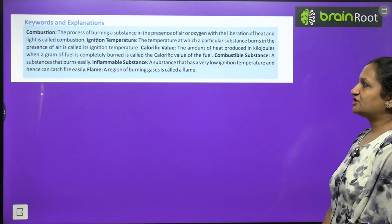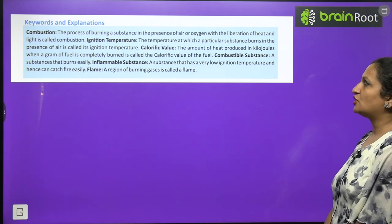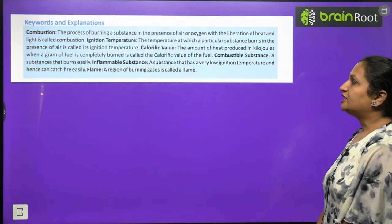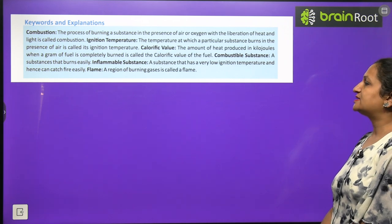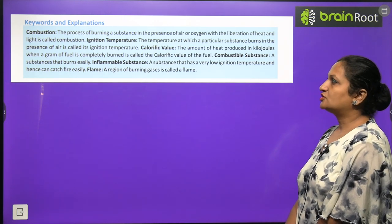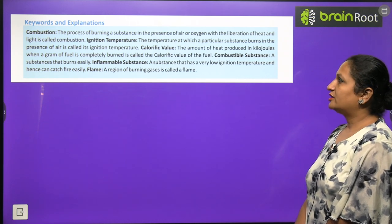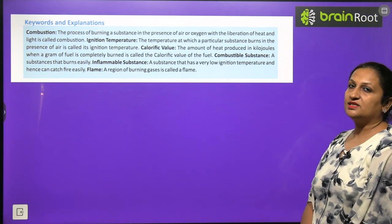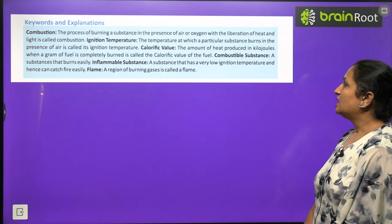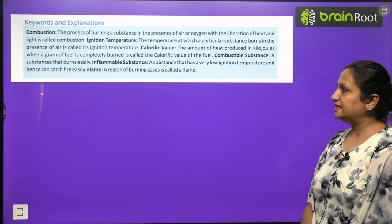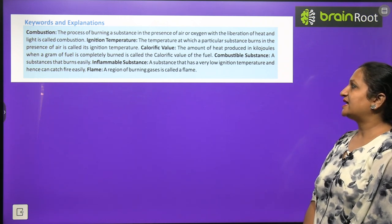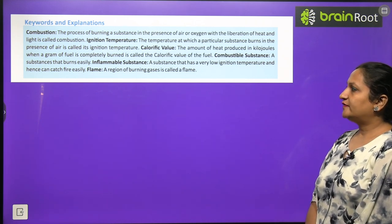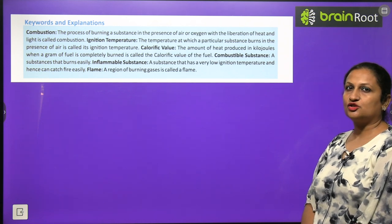Keywords: Combustion — the process of burning a substance in presence of air/oxygen with liberation of heat and light. Ignition temperature — the temperature at which a substance burns in presence of air. Calorific value — heat produced in kilojoules when a gram of fuel is completely burned. Combustible substance — a substance that burns easily. Inflammable substance — a substance with low ignition temperature that catches fire easily. Flame — a region of burning gases.